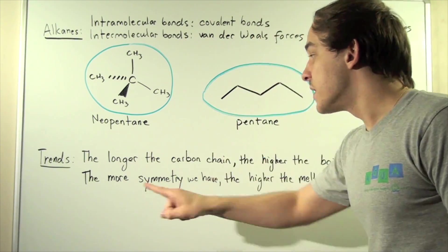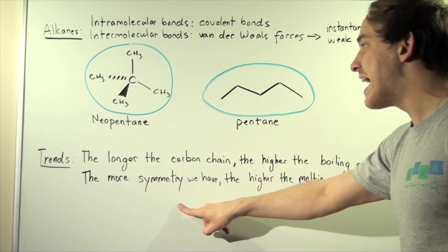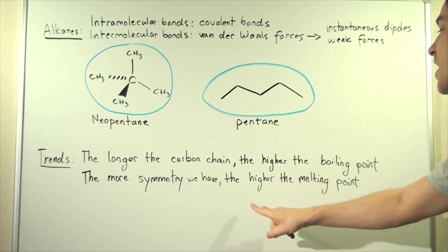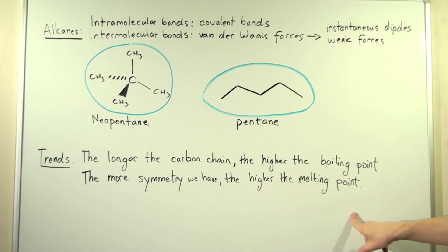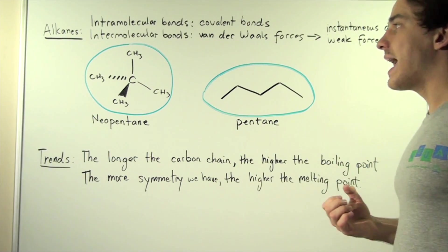Now on the contrary, the more symmetry we have in our alkane, the higher the melting point is. Now why is that?